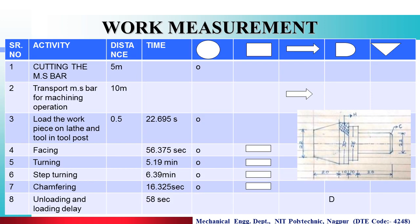As you can see here, this is called the usage chart for carrying out the different operations on this part. The first column shows the activity and distance moved by the job, then time taken by each process, then the symbol — that is operation, inspection, transport, delay, and storage.